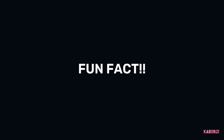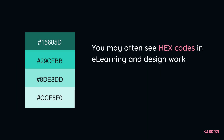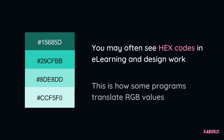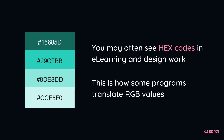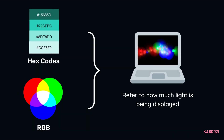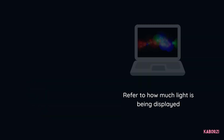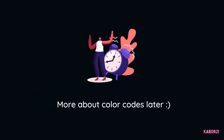Fun fact: you may often see hex codes in the work you do, as this is how PowerPoint, Articulate Rise, and other web design platforms translate RGB values. Both hex codes and RGB values are referring to how much light is displayed through the screen — it's just a different way of conveying the same information. We'll cover more about color codes later.